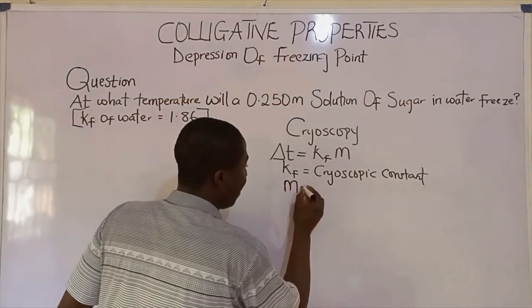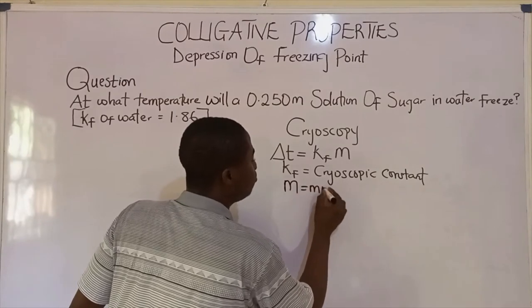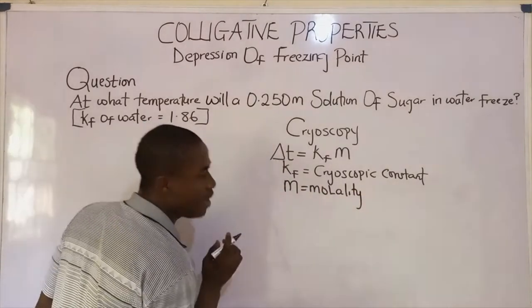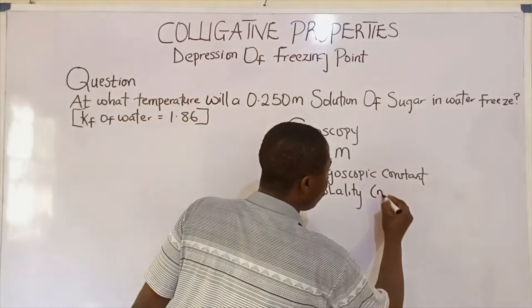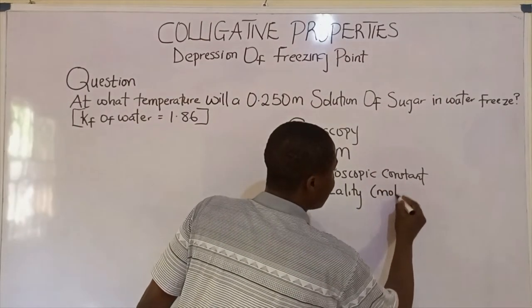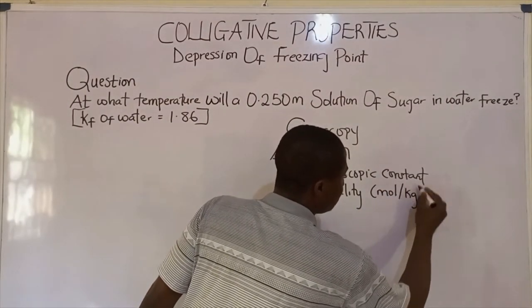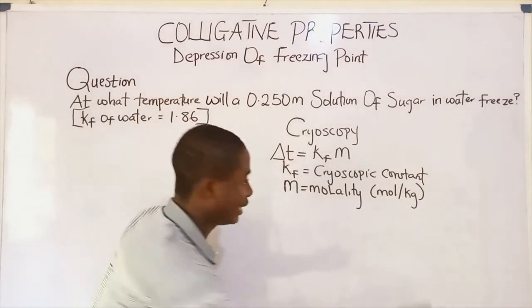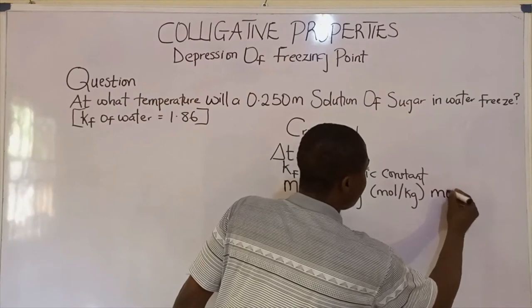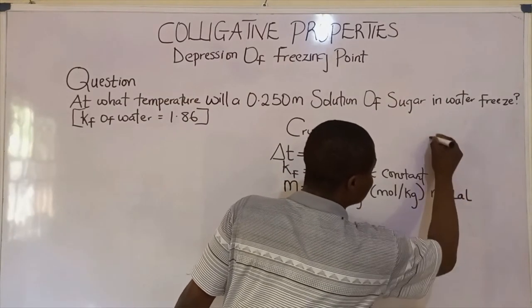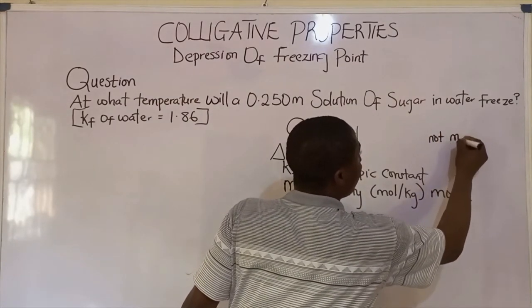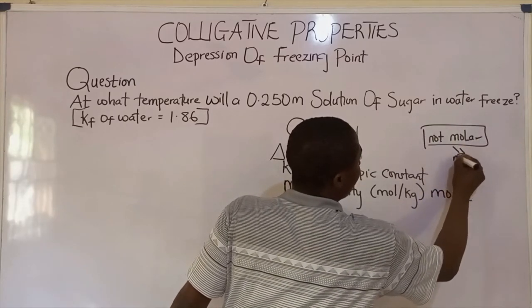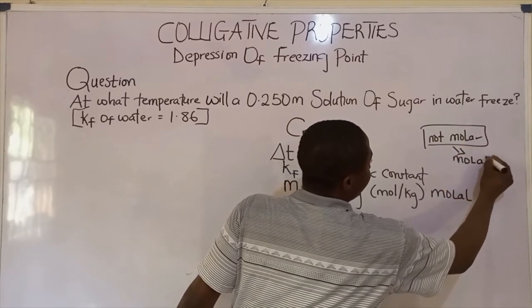What is m? m is called molality, and it is measured in moles per kg of solvent. Or you say molal — not molar. This is for molality.